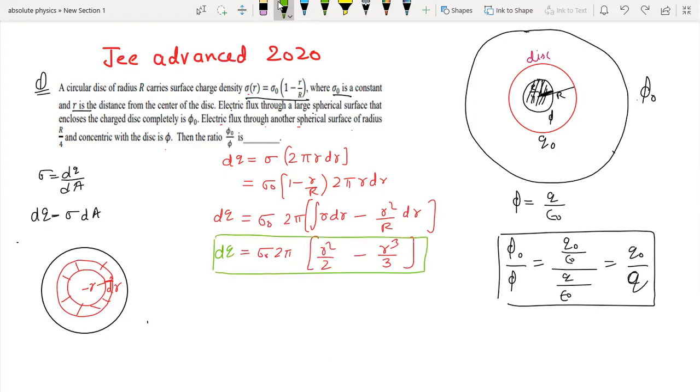We need to find phi naught by phi, which equals q naught by q. We will integrate from sigma naught 2 pi times R squared by 2 minus R cubed by 3, from 0 to R for the full disc.